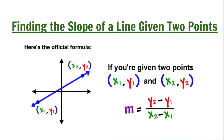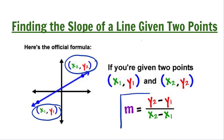Given the ordered pairs x1, y1, and x2, y2, the official formula to calculate for the slope is y2 minus y1 over x2 minus x1.